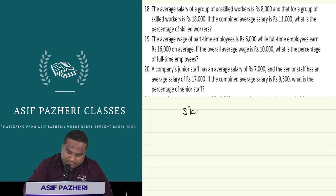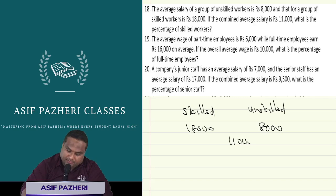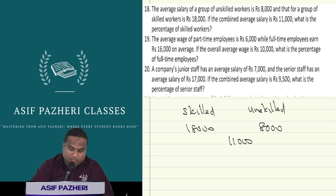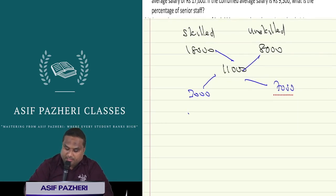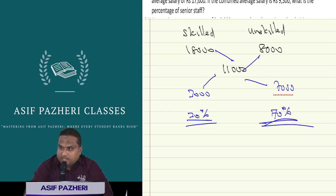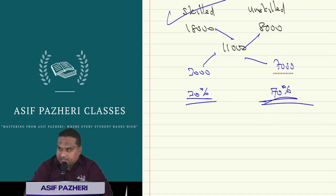Question 18: Skilled worker salary is Rs. 18,000. Unskilled worker salary is Rs. 8,000. Combined average is Rs. 11,000. Using the technique: 8,000 minus 11,000 equals 3,000, and 18,000 minus 11,000 equals 7,000. So the ratio is 3 to 7. This gives 30 percent skilled workers and 70 percent unskilled workers.